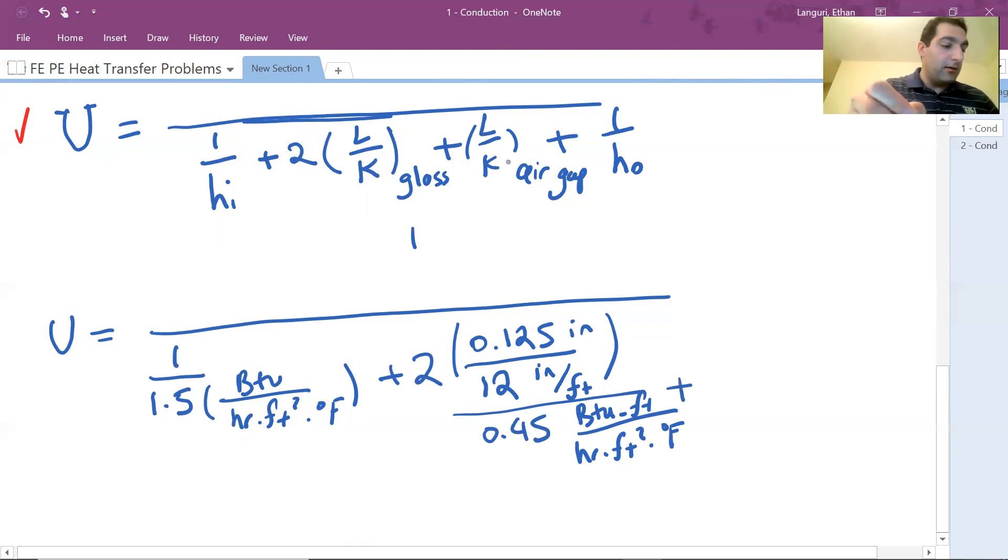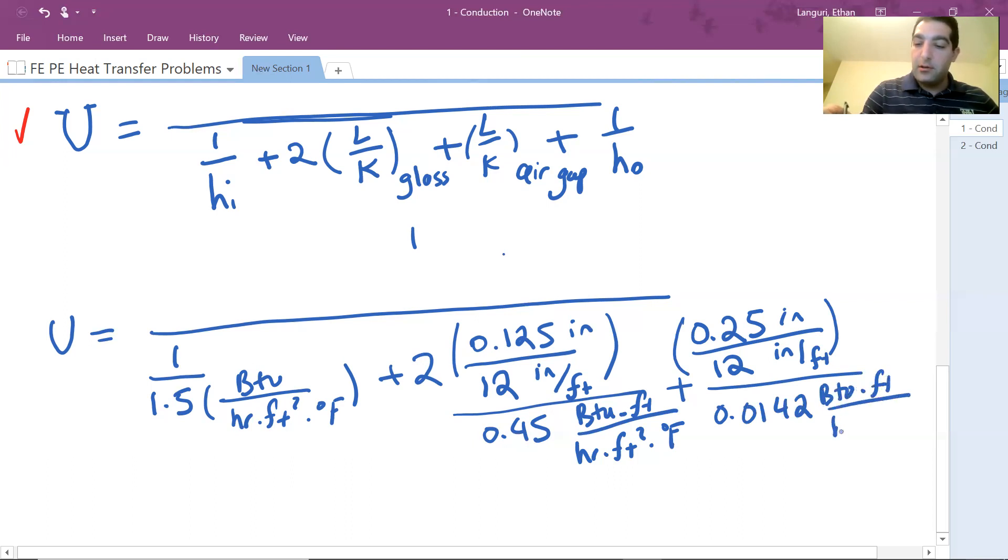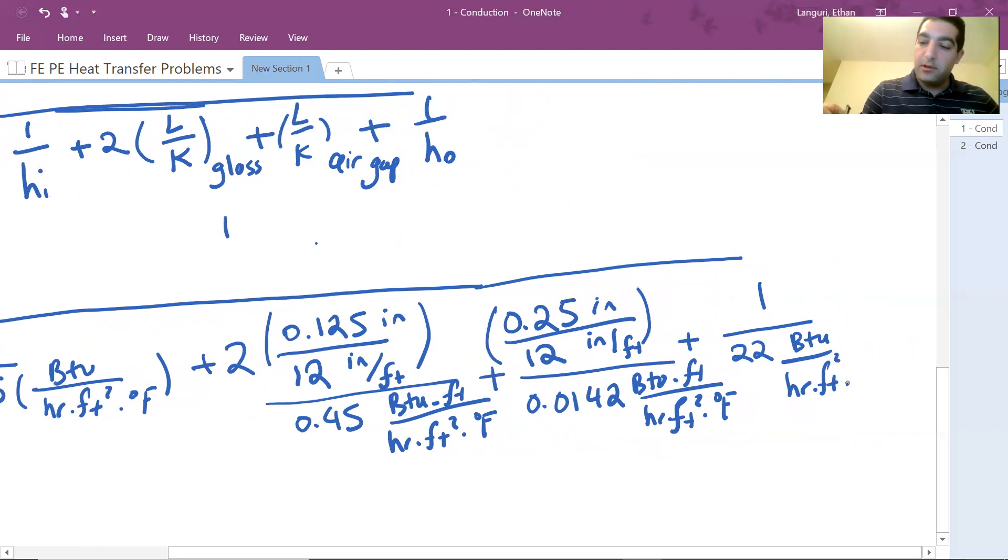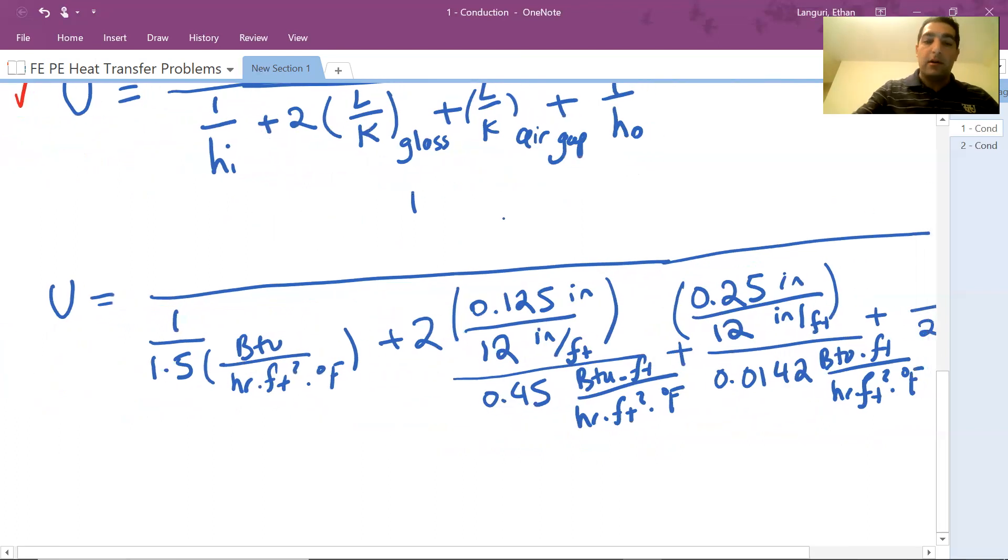And so this is 2L over K. K for glass we found to be 0.45 BTU foot per hour foot squared degree Fahrenheit. And I'm going to add L over K for air now. 1/4 inch, 0.25 inch, I'm going to divide it by 12. Since one foot is 12 inches, so I have L and then I have K of air, which is 0.0142. Let's write down the unit as well—BTU foot per hour foot squared degree F. And I have one more term to go, plus 1 over outside heat transfer coefficient, which is 22. So let's write down the unit: BTU per hour foot squared degree F. So this is my U.